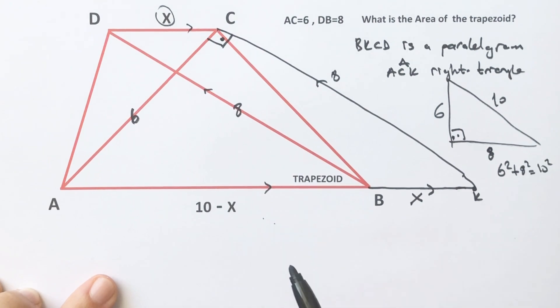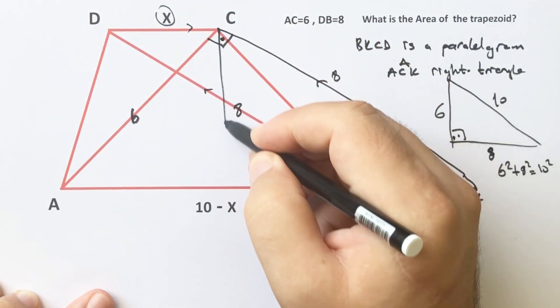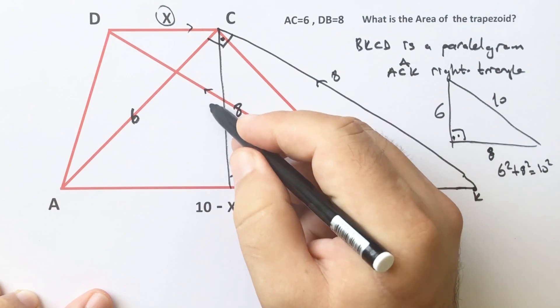If we draw a perpendicular line like this, we get the height of the trapezoid.